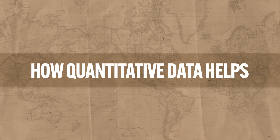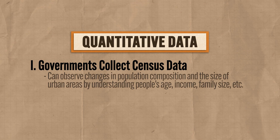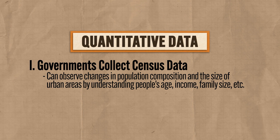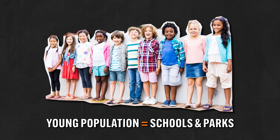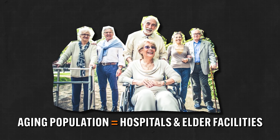Let me tell you briefly about how governments collect and use quantitative data — there are two you need to know. The first, the great granddaddy of all, is the collection of census data. Through the use of a census, governments can observe changes in population composition and the size of urban areas by understanding people's age, income, family size, etc. With this information, governments are better able to determine what services are needed. For example, if the census reveals a large number of children, governments may allocate more tax money to build schools and neighborhood parks. For aging populations, they may divert funds to build more hospitals or facilities for the elderly. Census data helps governments make those decisions with a decently high confidence rate.